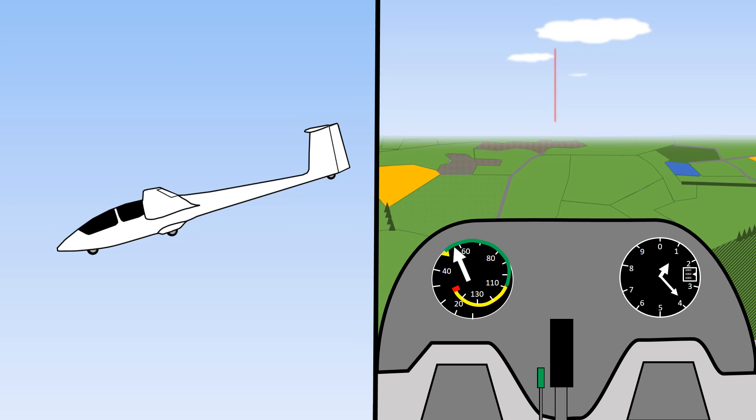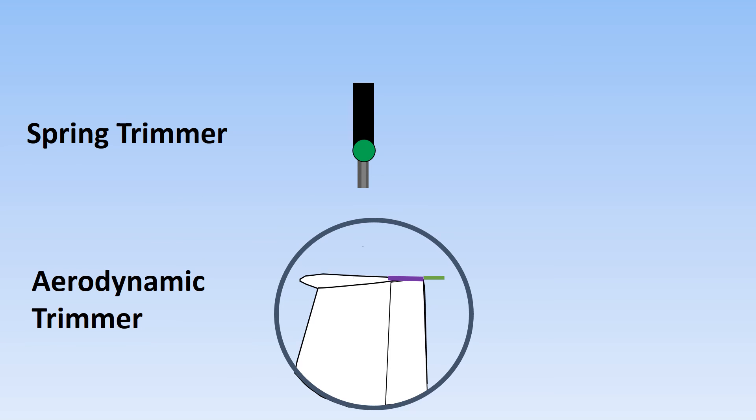There are two main types of trimmer. Spring trimmers use a spring to move the stick slightly forwards or backwards and hold it in that position. Aerodynamic trimmers use a small trim tab on the elevator which slightly lifts or depresses the elevator in flight.